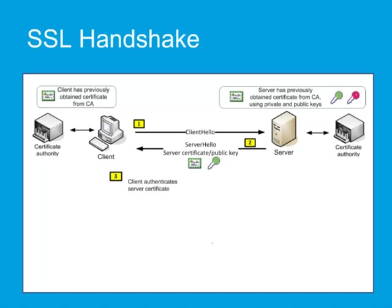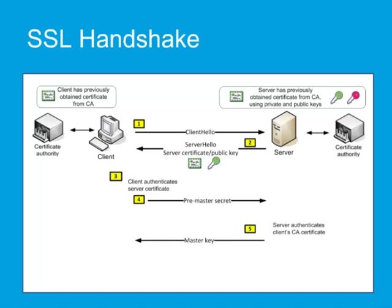The client uses the information sent by the server to authenticate the server. The client then creates a pre-master secret for the session, encrypts it with the server's public key, and sends this encrypted pre-master key to the server, along with the client's own CA certificate, if requested. The server uses its private key to decrypt the pre-master secret, and then performs a series of steps, which the client also performs, starting from the same pre-master key, to generate the master secret.